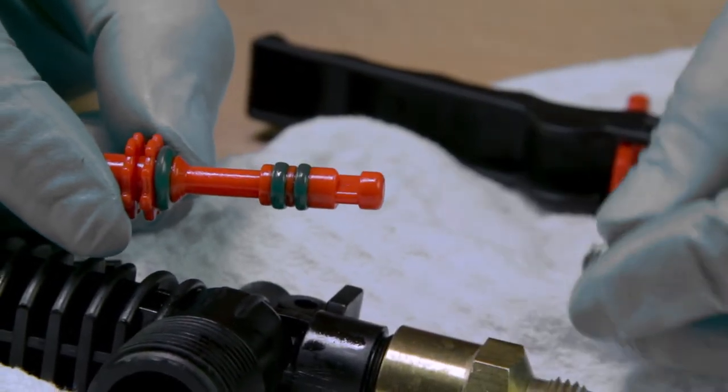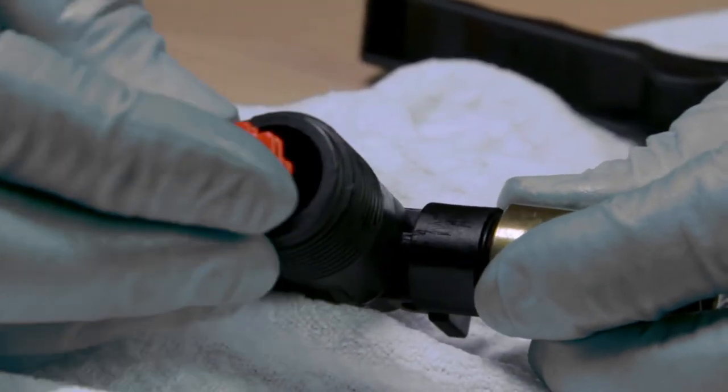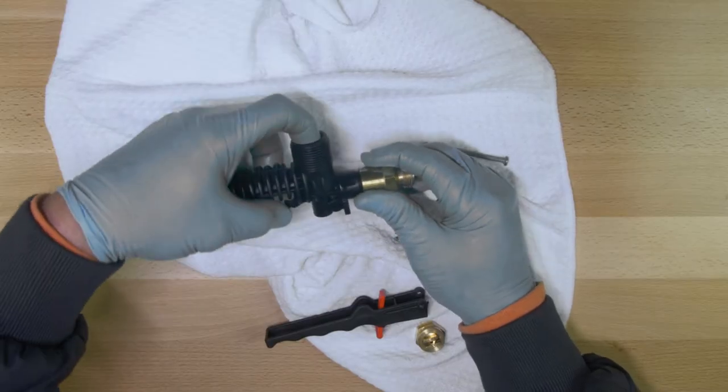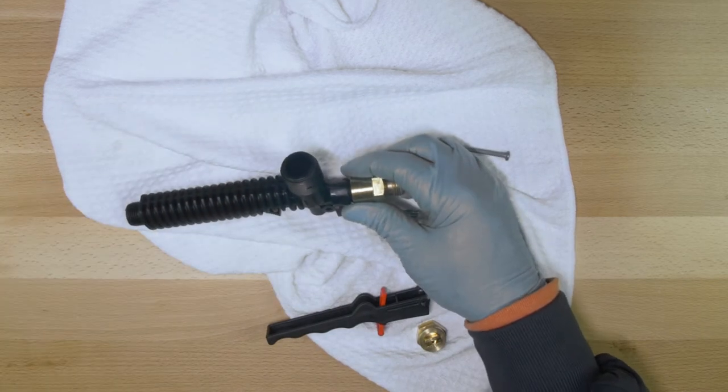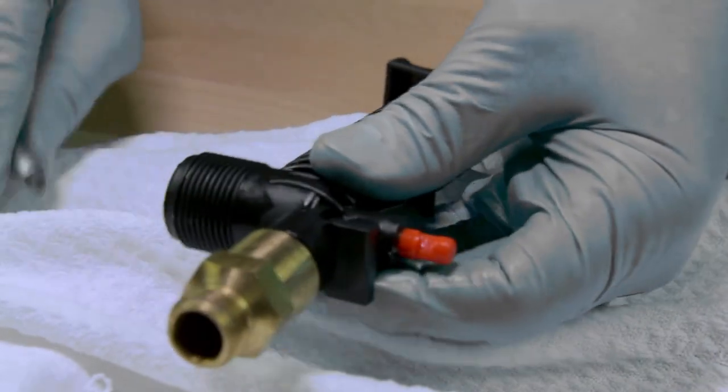What ends up happening is this shaft just goes into the center of the trigger gun here and needs to be pushed in and inserted. You need to give it a little bit of a push to make sure that it goes through all the way. Like so.